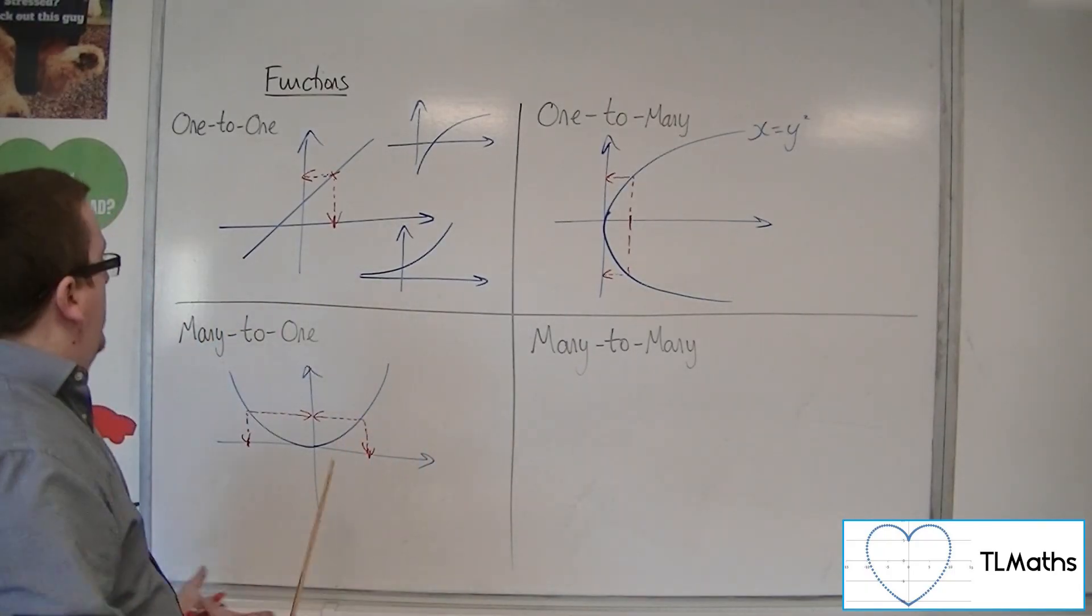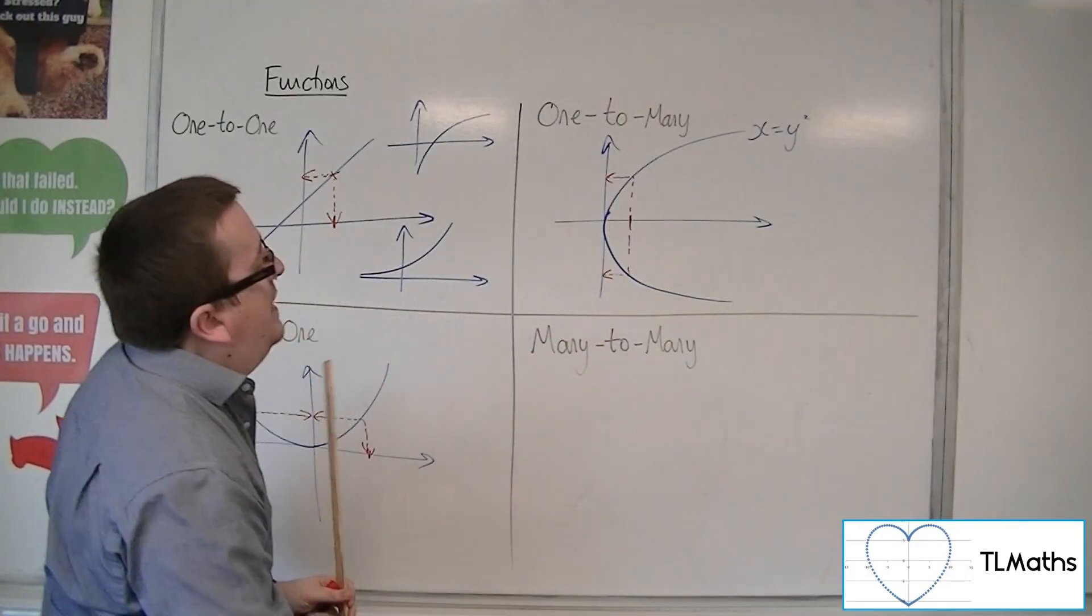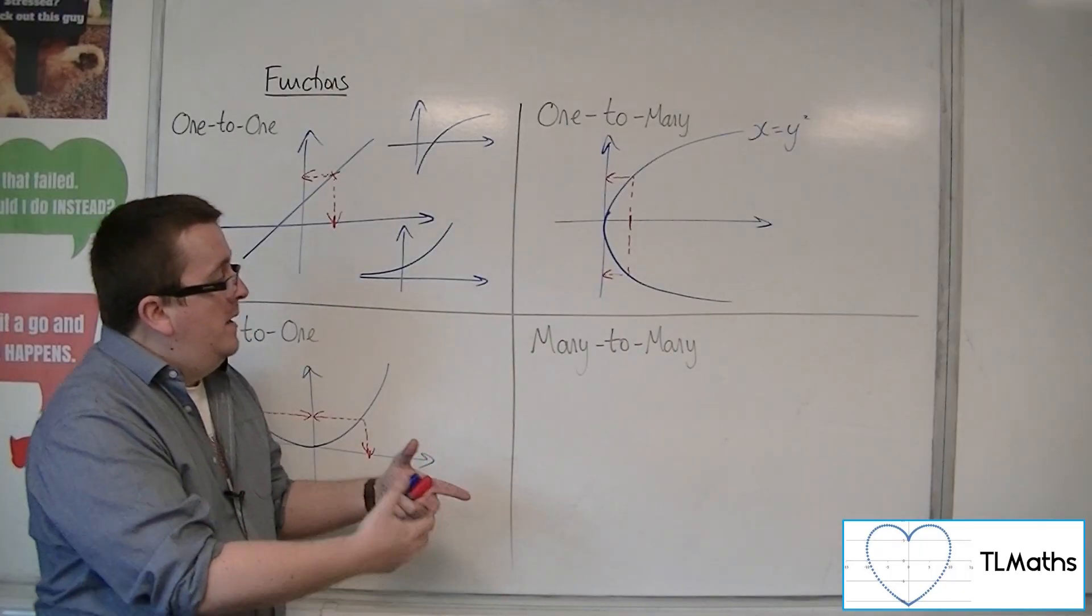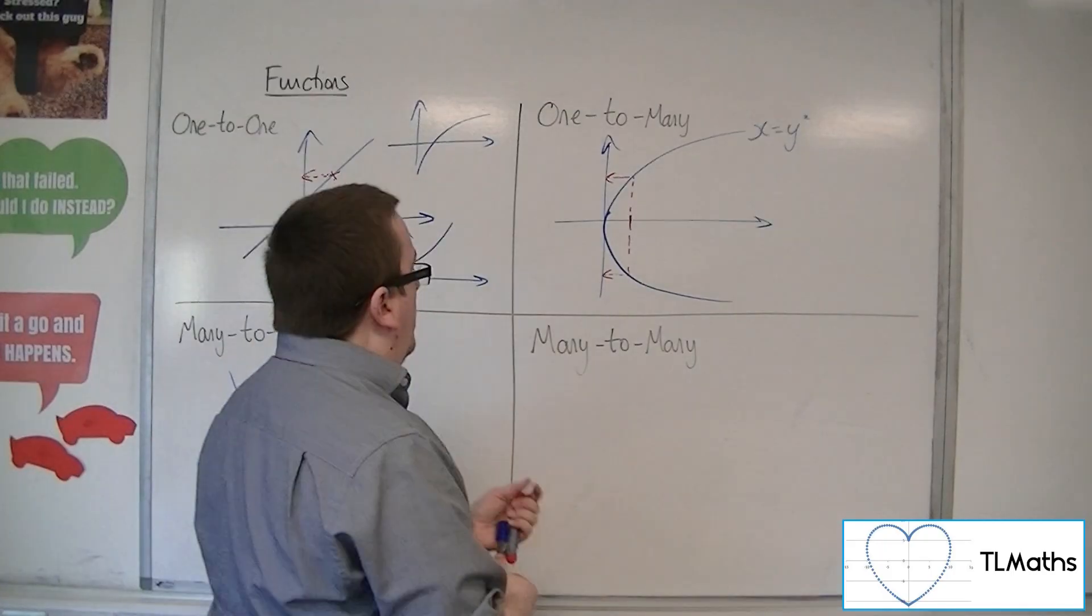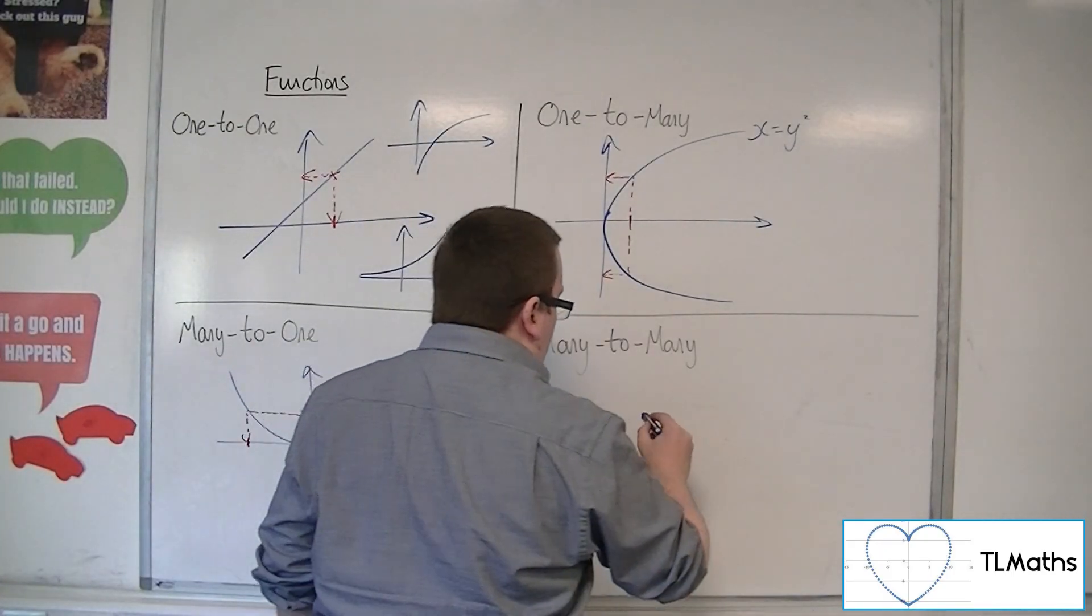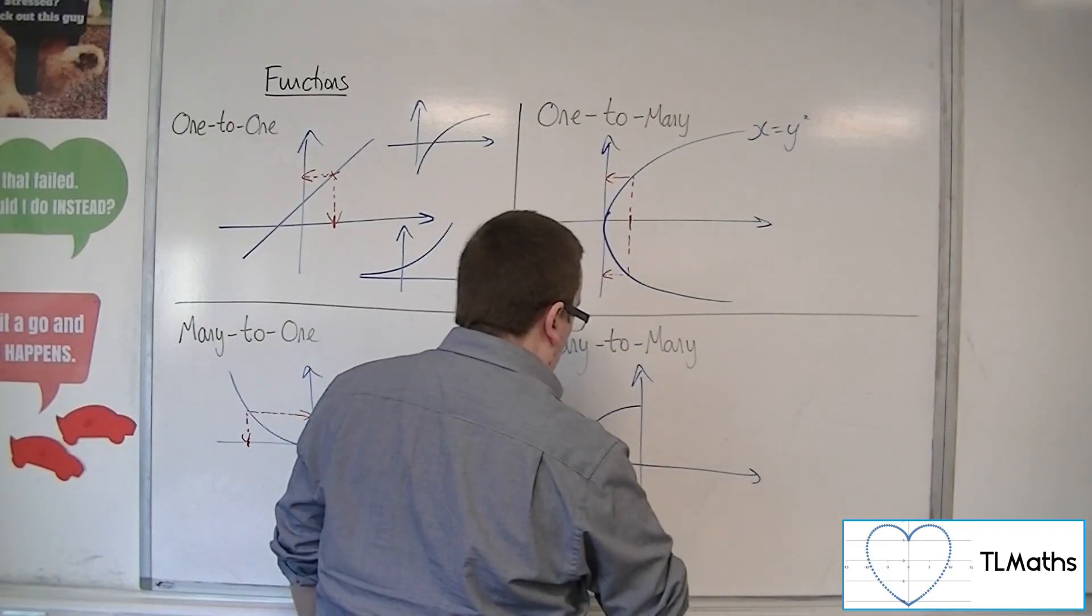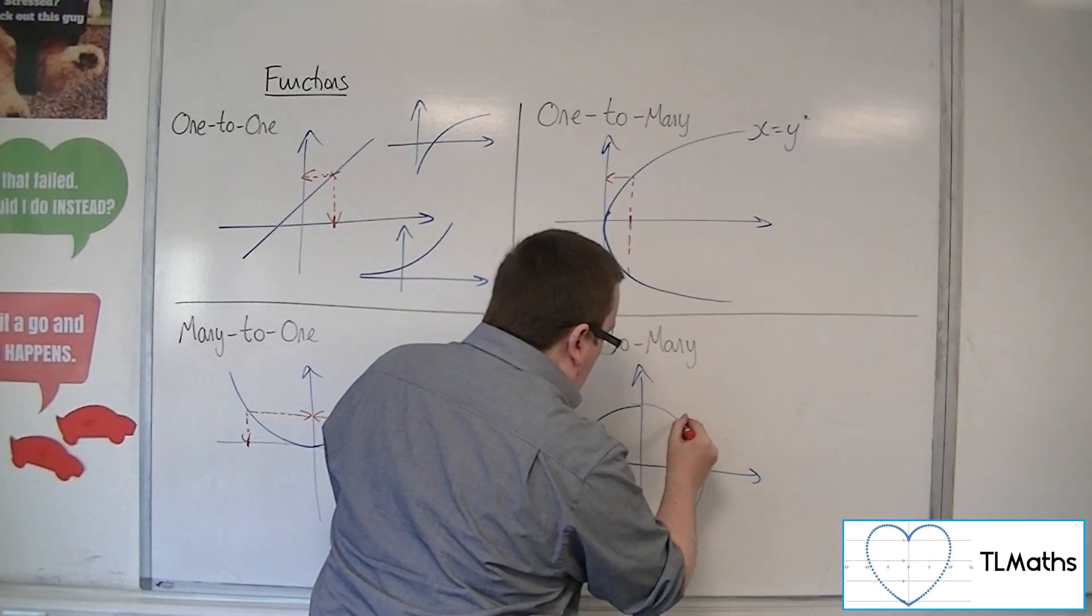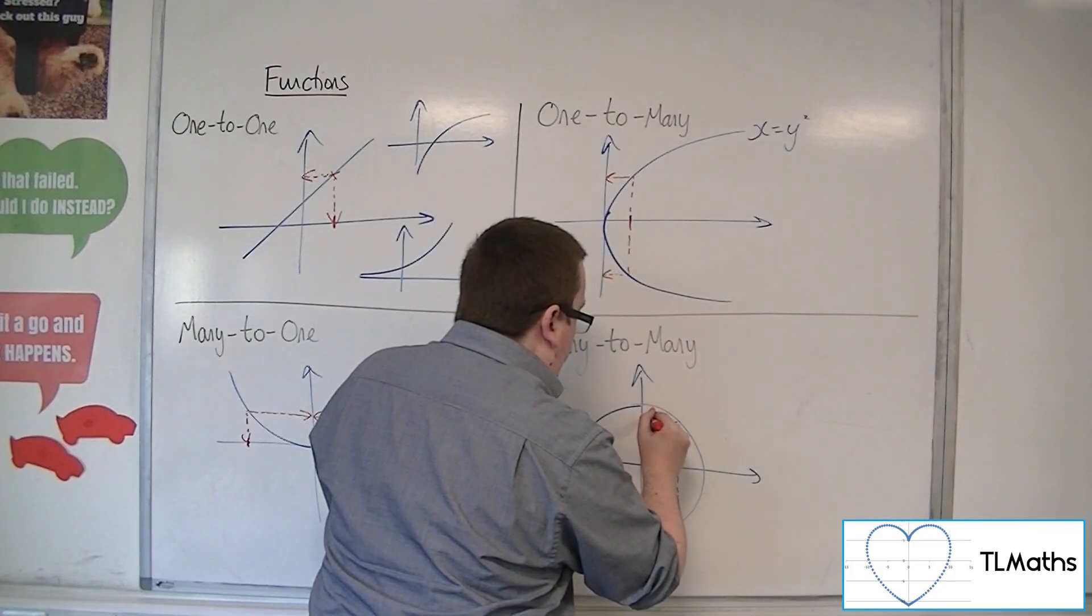A graph could be both many-to-one and one-to-many, and hence we would refer to it as many-to-many. There are many values of x that could give me many values of y. What I mean by that could be a graph that is a circle. If I choose this point here, one value of x here is going to give me many values of y.